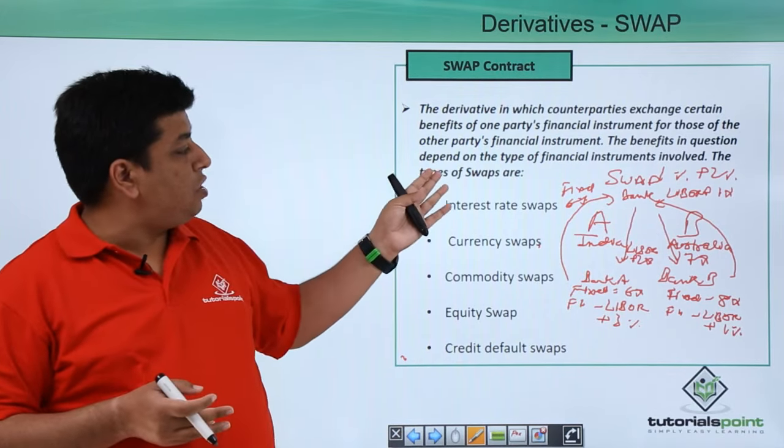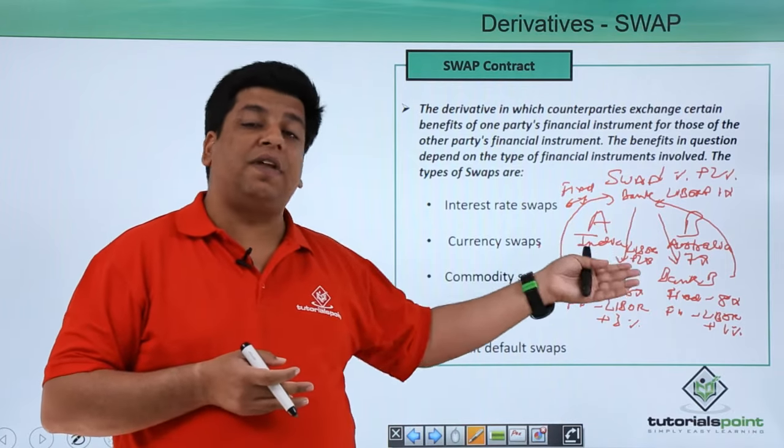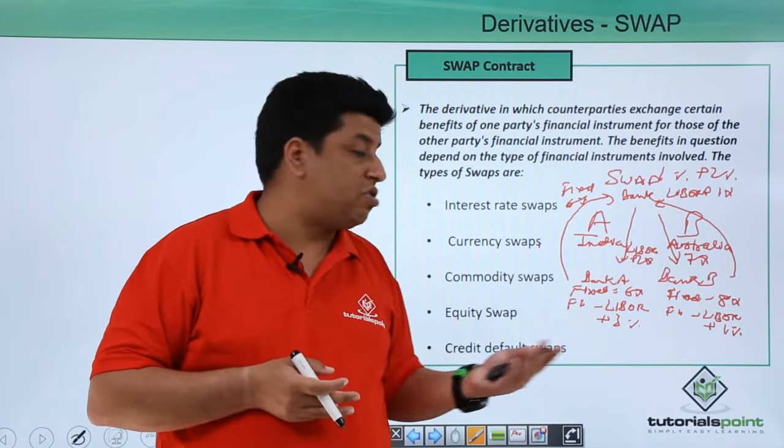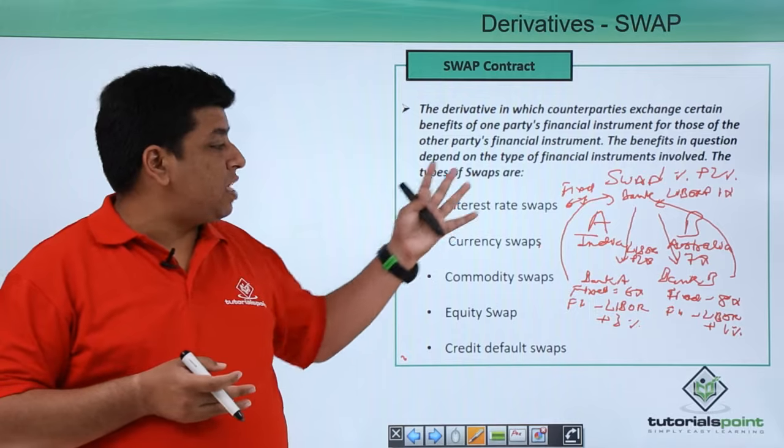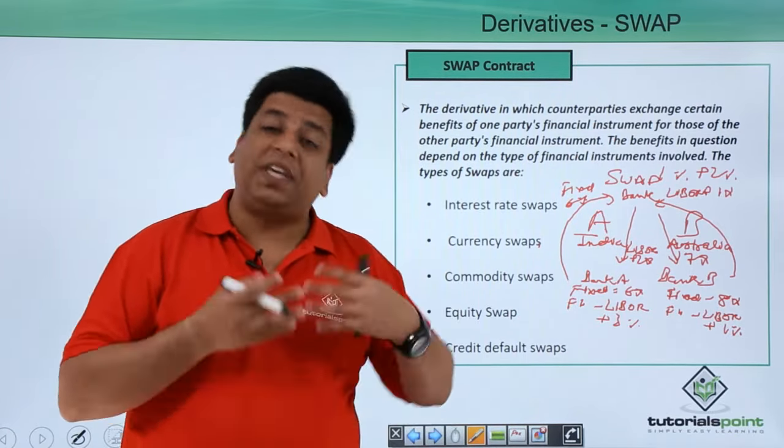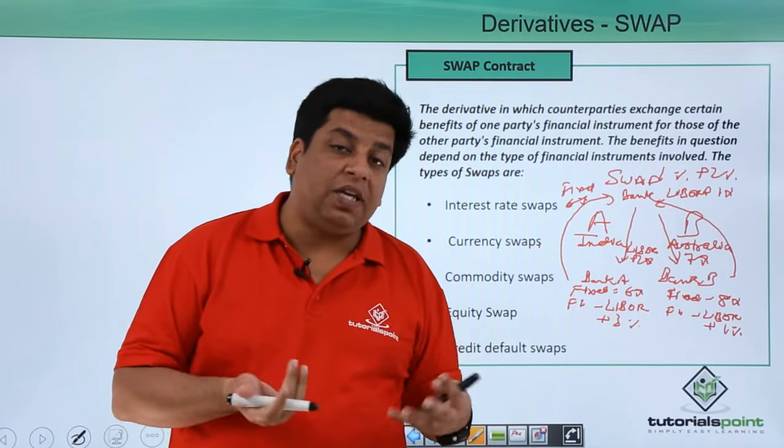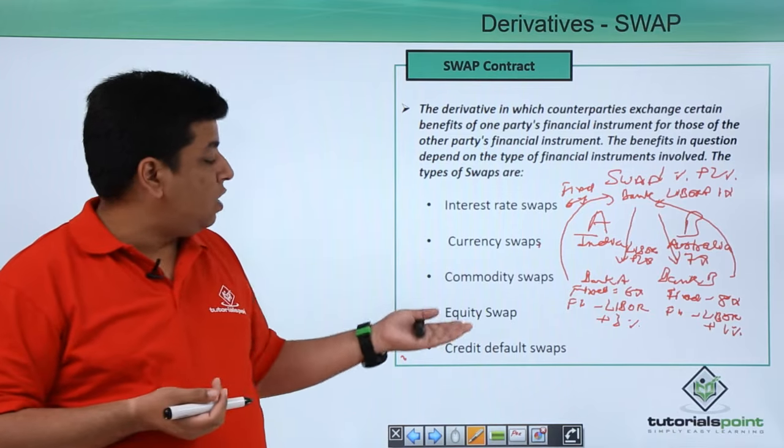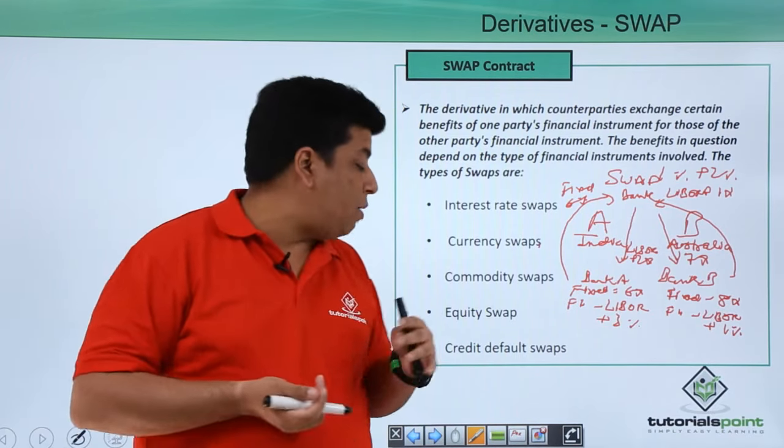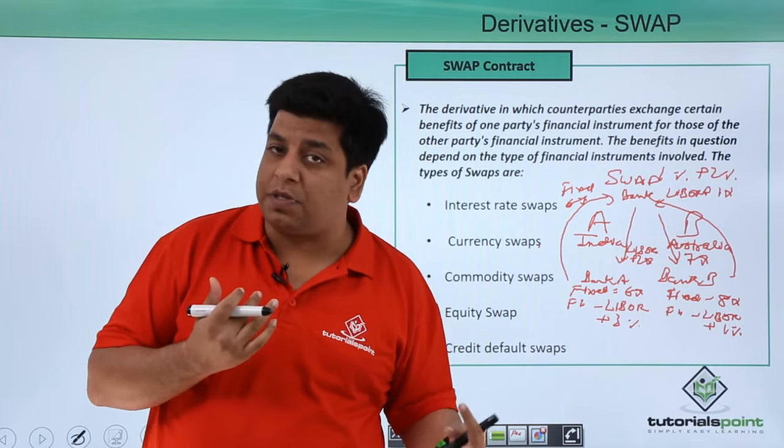The benefits in question depend on the type of financial instruments involved. Here the financial instrument is interest rate. The types of swaps are: we took an example for interest rate, we can have currency swaps, commodity swaps, equity swaps, or credit default swaps.